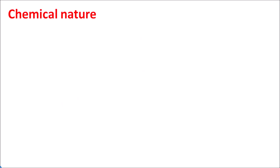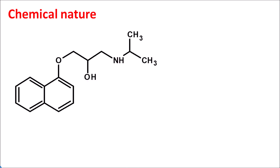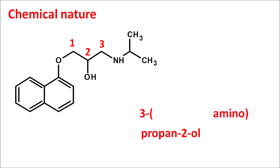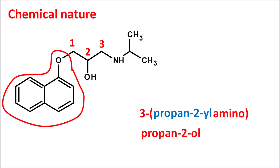First of all let us see the chemical nature of this drug. This is the structure of propranolol. Here we can identify the propanol chain — positions one, two, three. Instead of ethanol, this drug has the propanol chain, written as propan-2-ol. At the third position an amine group is present, so 3-amino. To this amine group an isopropyl chain is attached. Finally, at the first position a naphthalene ring is present, attached through oxygen — written as 1-naphthyleneoxy. That is the complete name of propranolol.